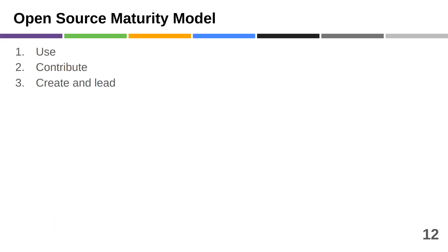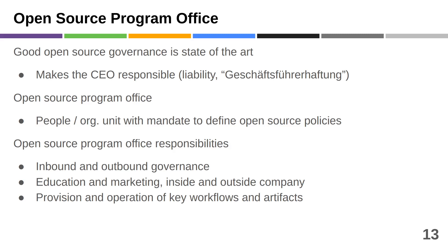That requires certain capabilities that you need to build up just to start using open source legally correctly. Once you do that, you'll want to contribute — send back bug fixes, and might even want to create and lead an open source project. All of this is usually given as a mandate inside companies who use open source components in their products to a staff function or organizational unit called the open source program office. They get the mandate to define how to deal with open source, define the policies, execute these policies, and ensure these policies — even though they'll have to work with the development organization.